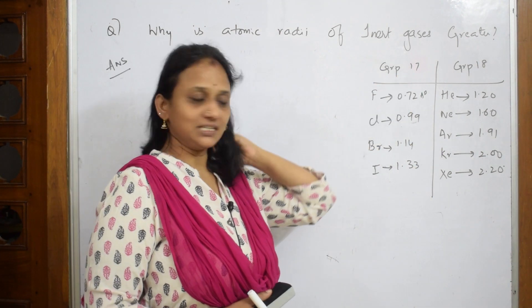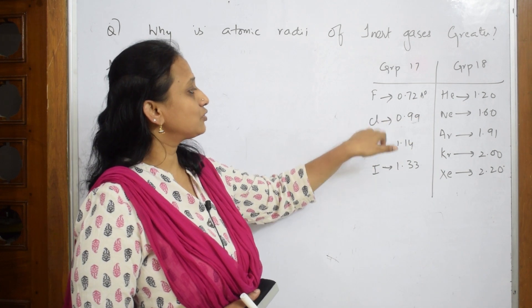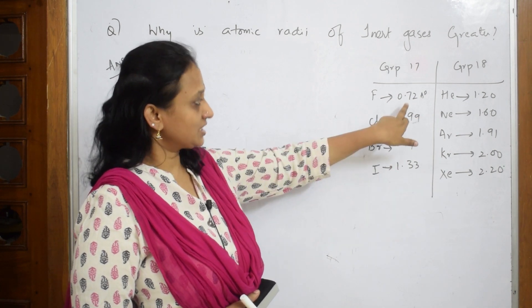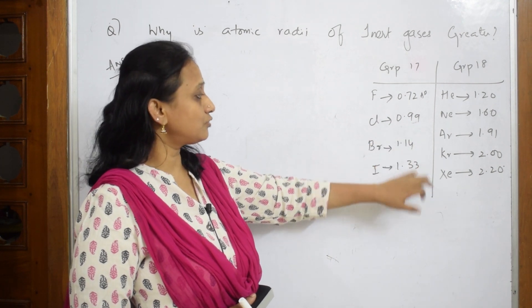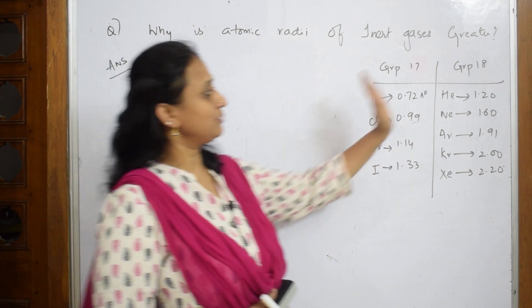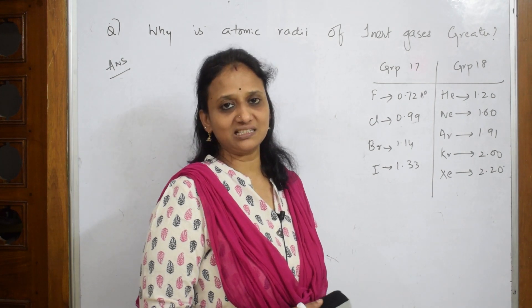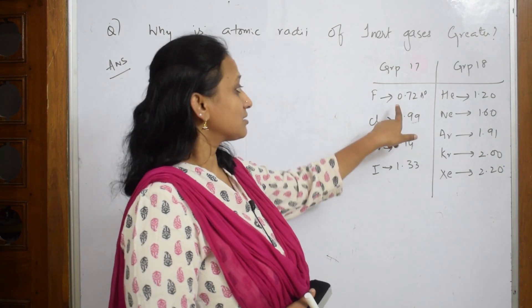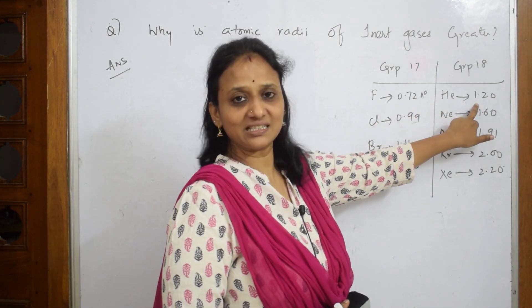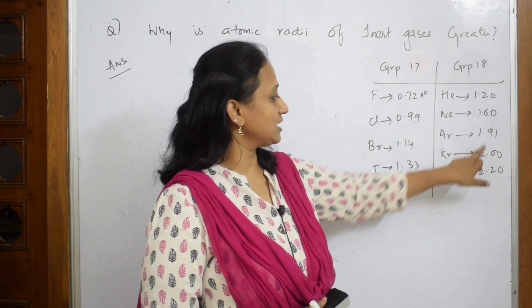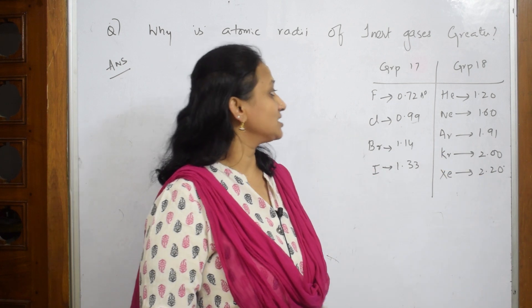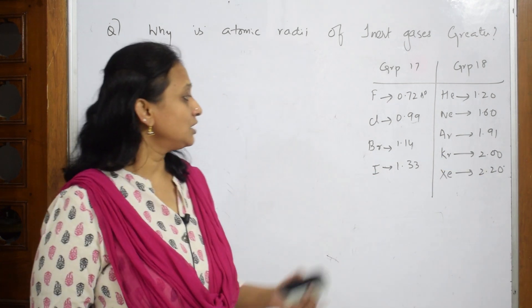How can we justify that? They've already given the values. When I compare Group 17 and Group 18, the halogens: fluorine 0.72, chlorine 0.99, bromine 1.14, and iodine 1.33. If I go to the next group, the inert gases, there is an increase for each corresponding element.